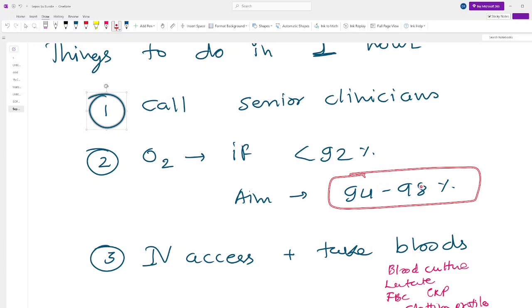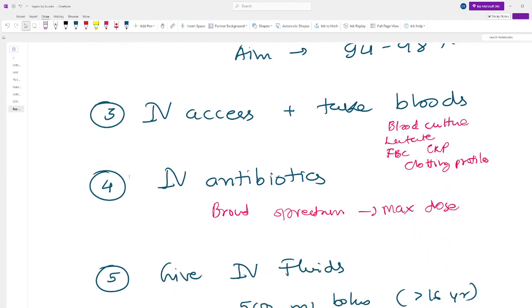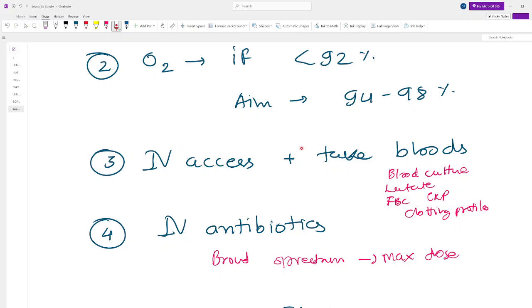The third thing is IV access and take bloods. Large bore cannula, take blood samples for blood culture, lactate obviously, but also for full blood count, CRP, clotting profile, etc.